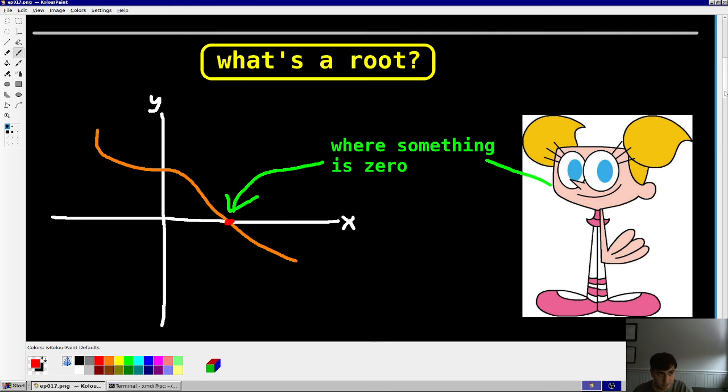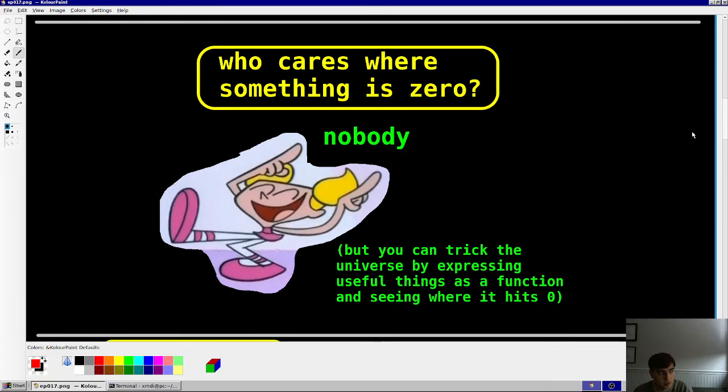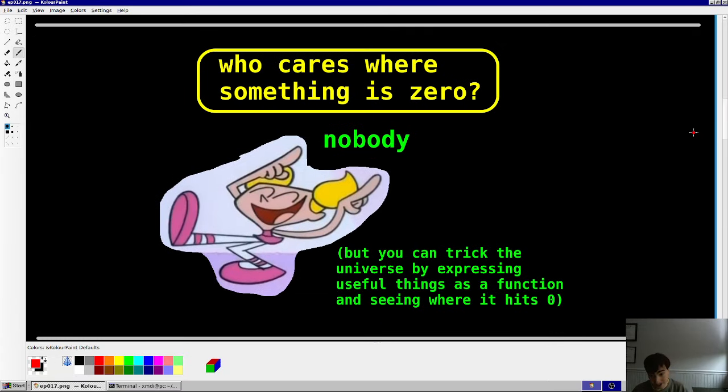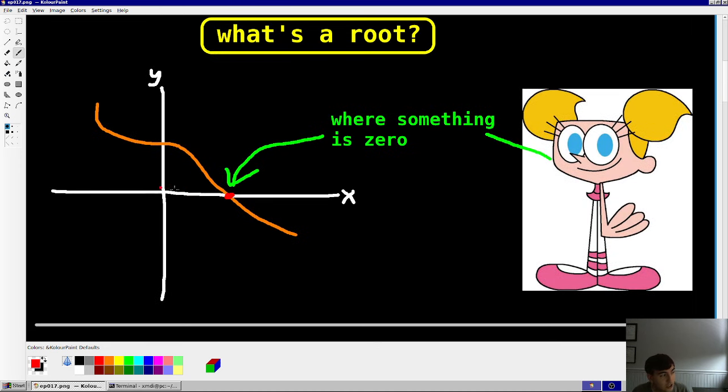The next question that you should ask would be, who cares where something is 0? And really, the answer is nobody cares. But the thing is, you can actually trick society and the universe and yourself into things actually being useful by representing useful things as this orange curve. If this is a curve for which crossing 0 is useful, then finding that 0 would also be useful. I'll give you an example.